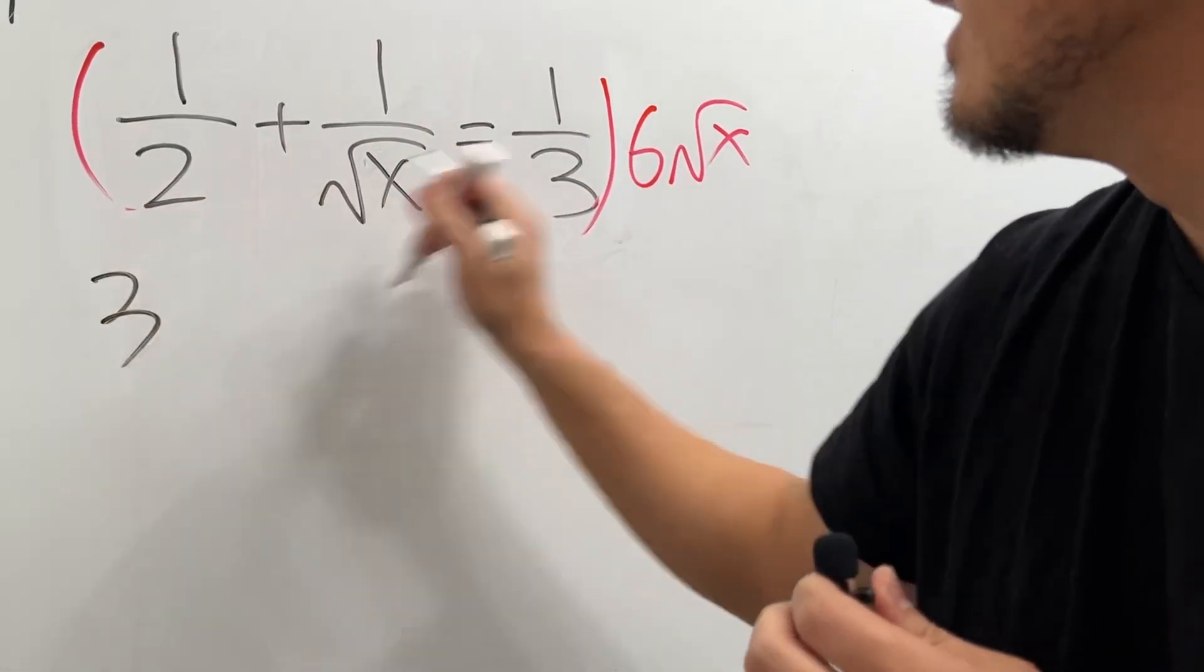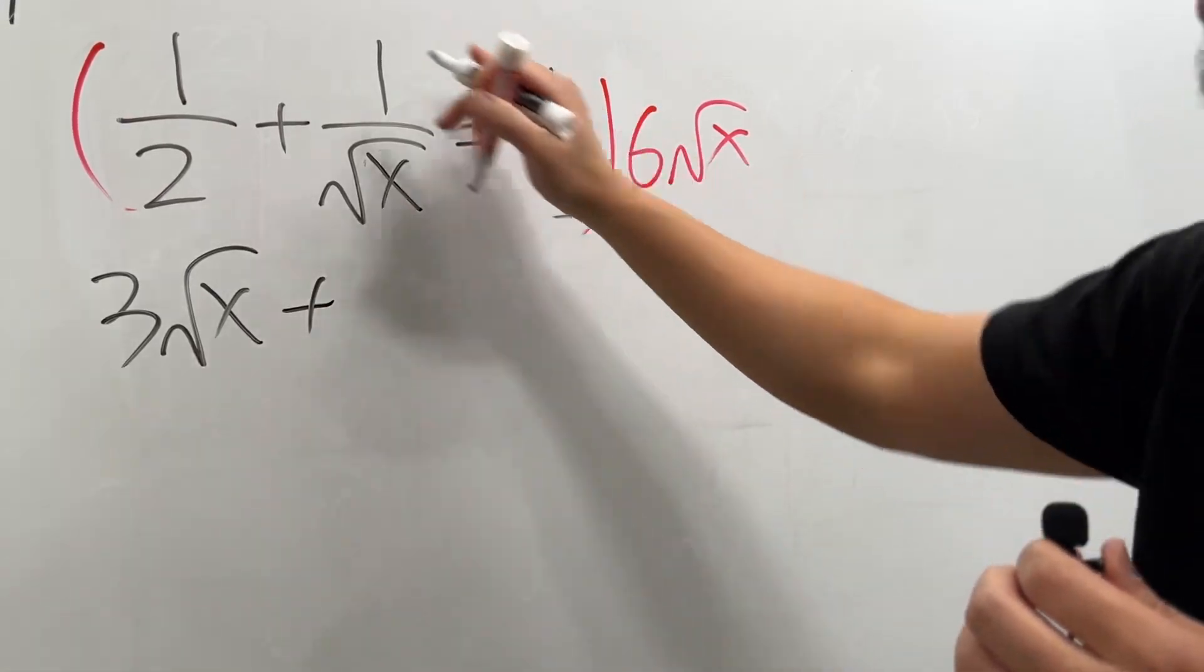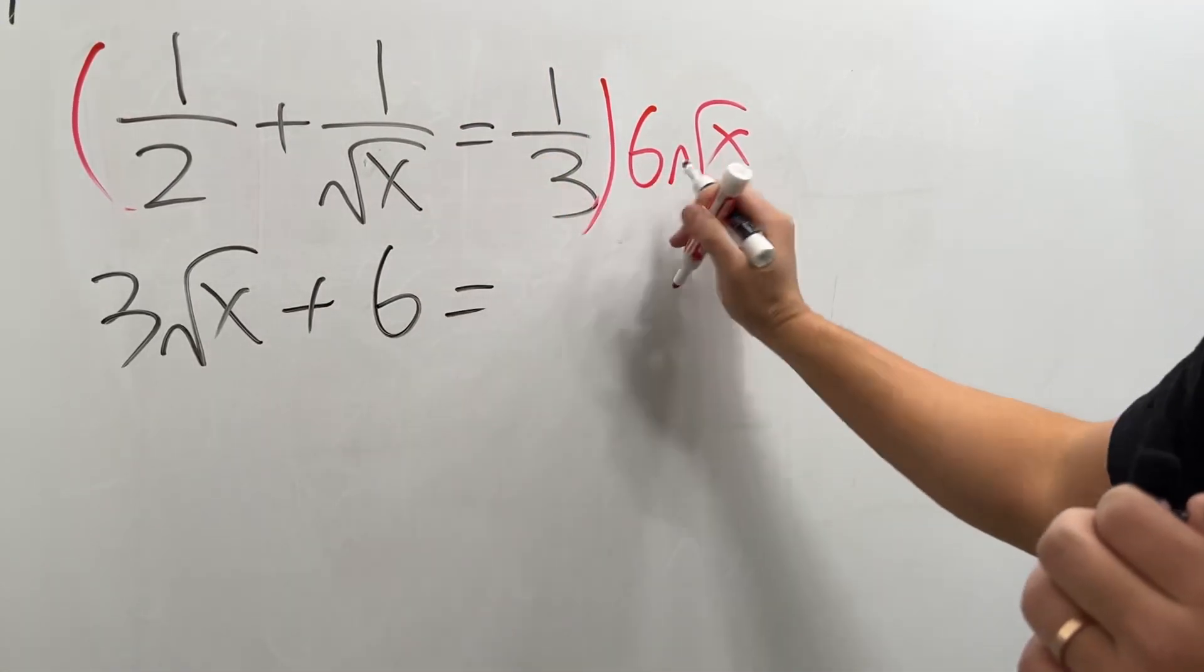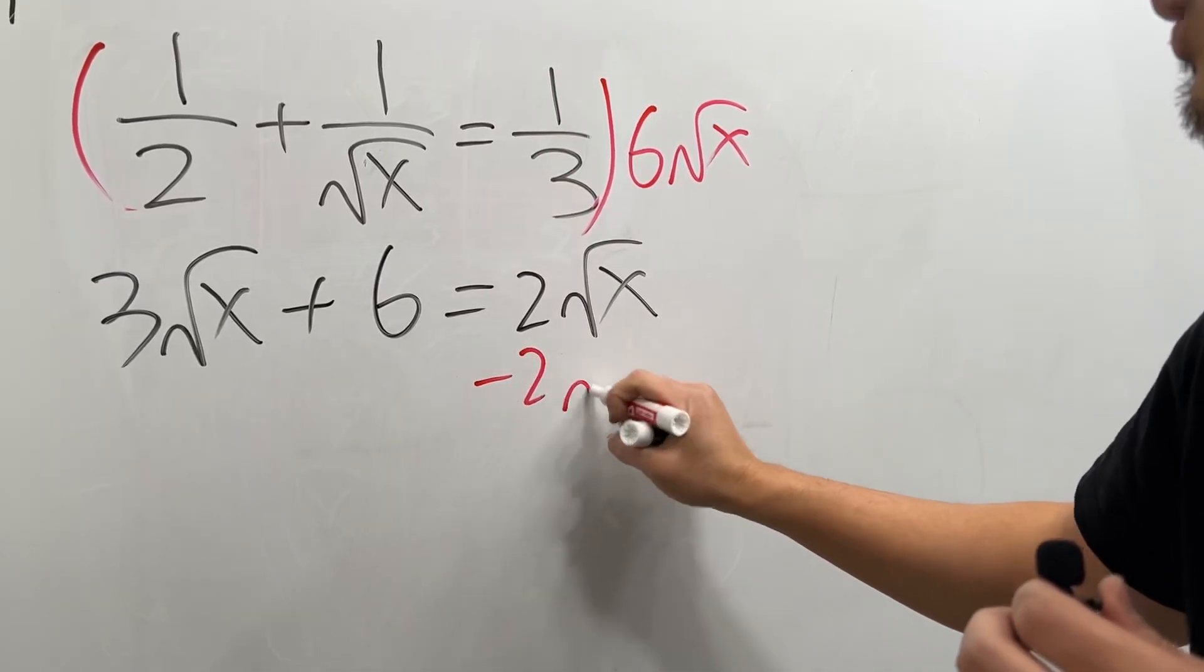We take this times that, two and three reduces to get three, and then square root of x times one doesn't matter. Next, we have this and that cancel, we just have six times one is six, and that's equal to this and that cancel, we have two, and then square root of x times just this.